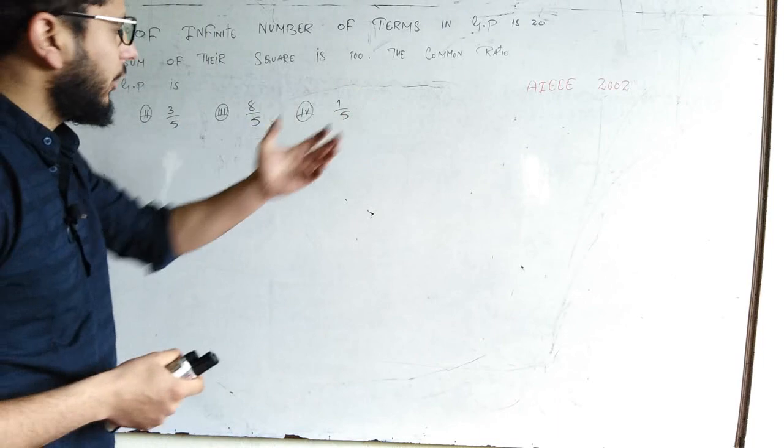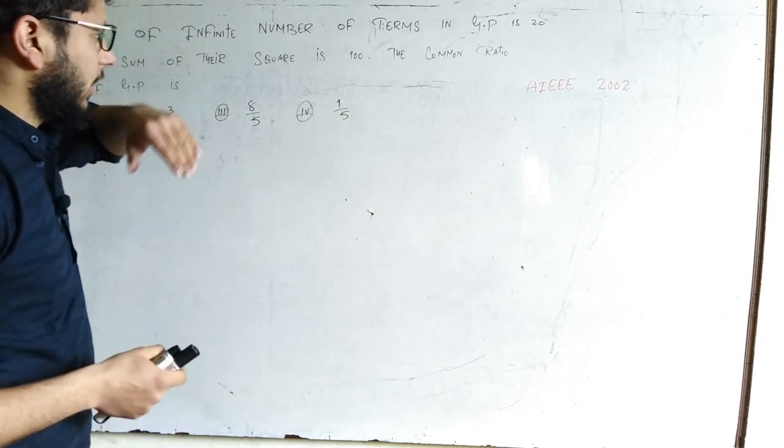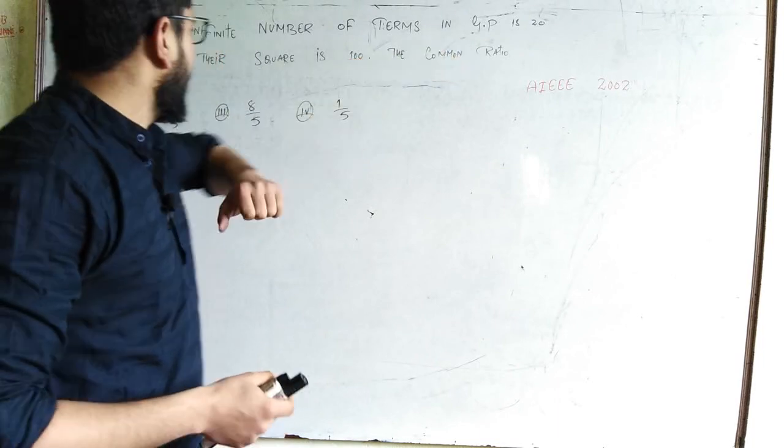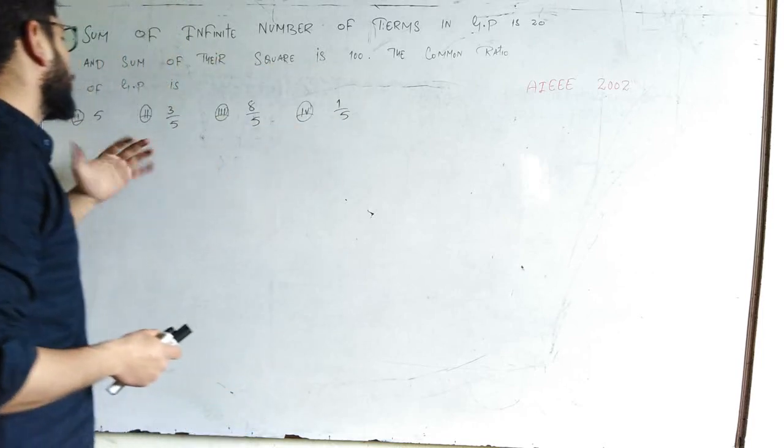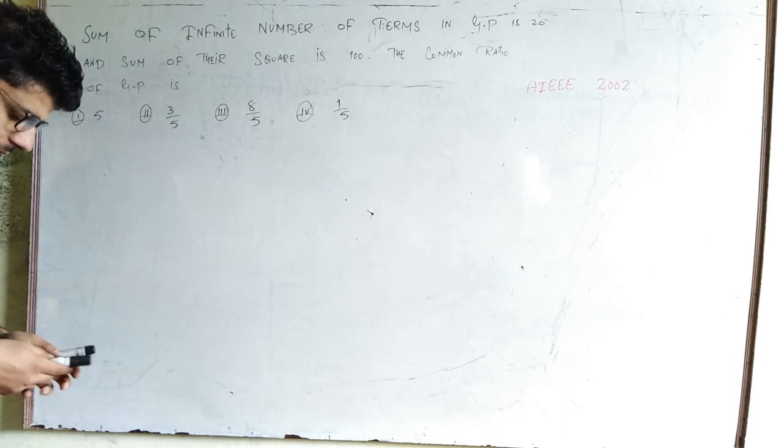The question is on geometric progression. You are given the sum of an infinite number of terms is 20 and the sum of their squares is 100. We need to find the common ratio.